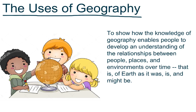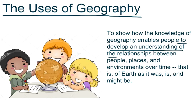The sixth and final essential element of geography is the use of geography. Its purpose is to show how the knowledge of geography enables people to develop an understanding of the relationships between people, places, and environments over time — of earth as it was, is, and might be in the future. We will be using this throughout the year for the geography of Texas and the United States. To break it down: 'develop an understanding of the relationships between people, places, and environments over time.'